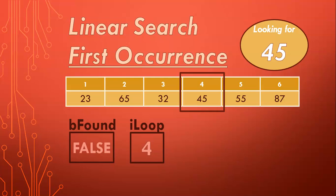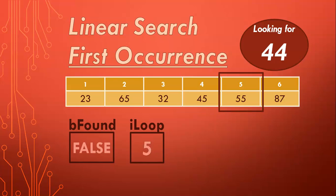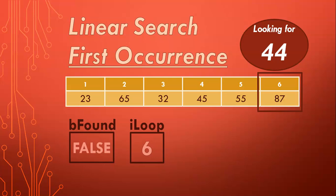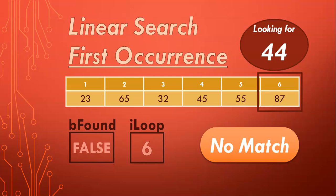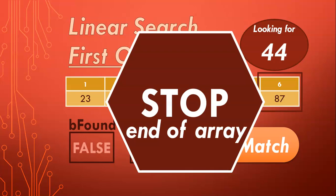Now, let's go back to before we found the 45, and let's pretend we were looking for a 44 instead. Everything would have been the same up until that point. We'd check position 4 — is that a 44? No, that's a 45, so that's not a match. We increase the looping variable and go to position 5 — is that a 44? Nope. Increase to the last value — is that a 44? Nope, there's no match. So we stop because we've reached the end of the array. That's the other scenario that could make us stop our loop.